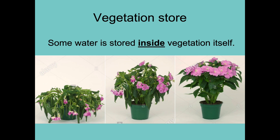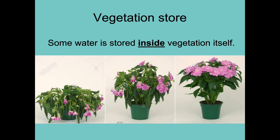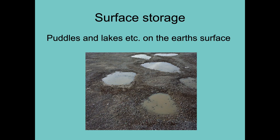The vegetation store is inside the plant. The difference between the interception store and the vegetation store is that in the interception store, the leaves are wet — you can see the water on them. In the vegetation store, the water is inside; you can't see it. That's a store. Surface storage could be a pond, a lake, a reservoir, a puddle, or a paddling pool — it really doesn't matter. The stores are generally pretty obvious because they say 'store' in the name.